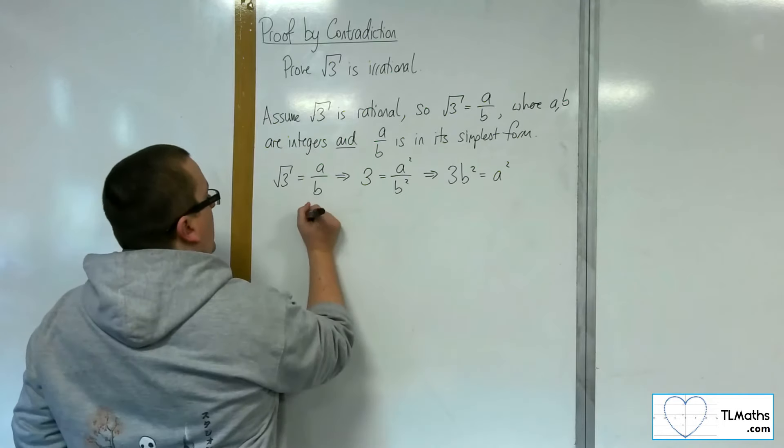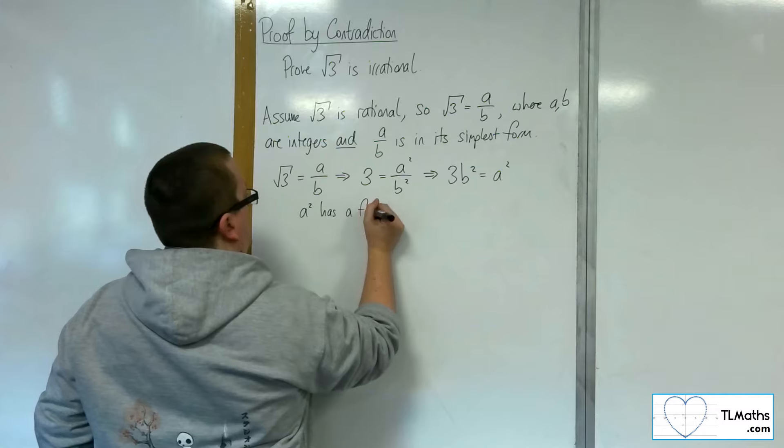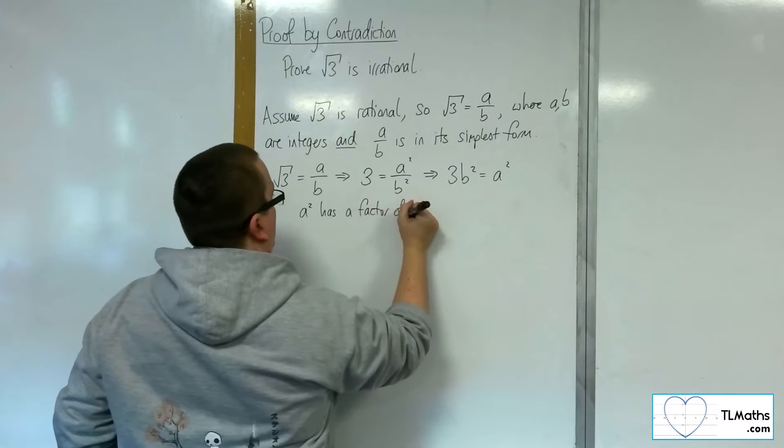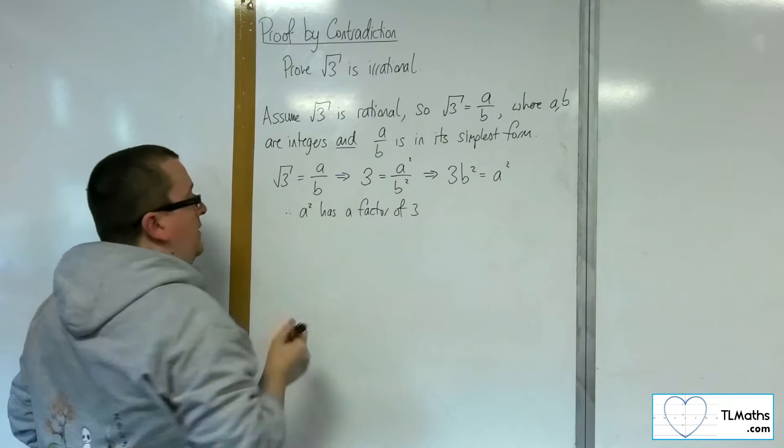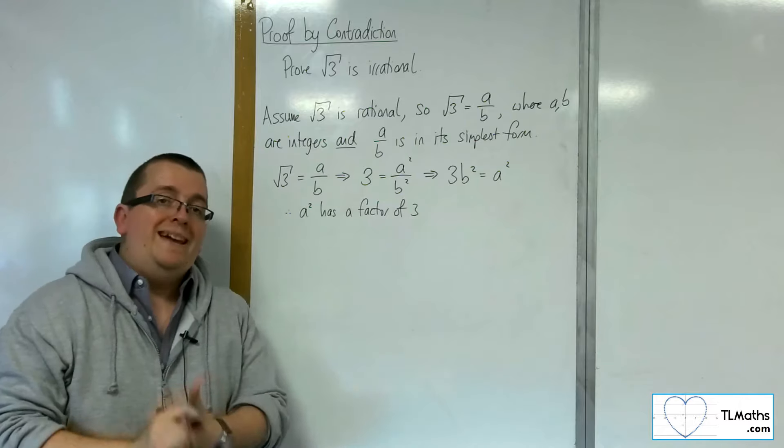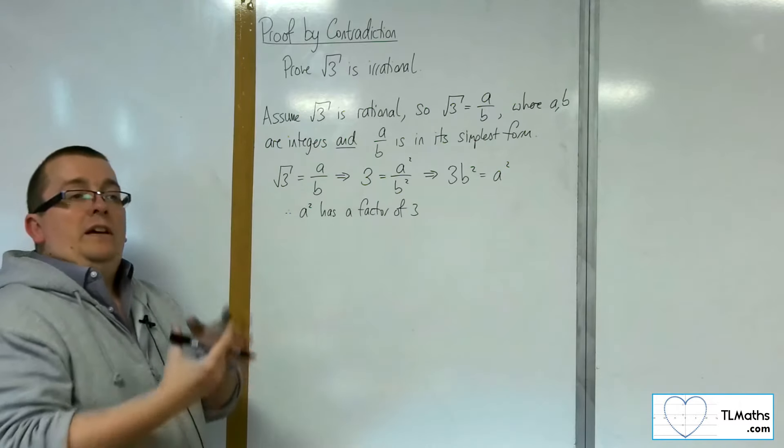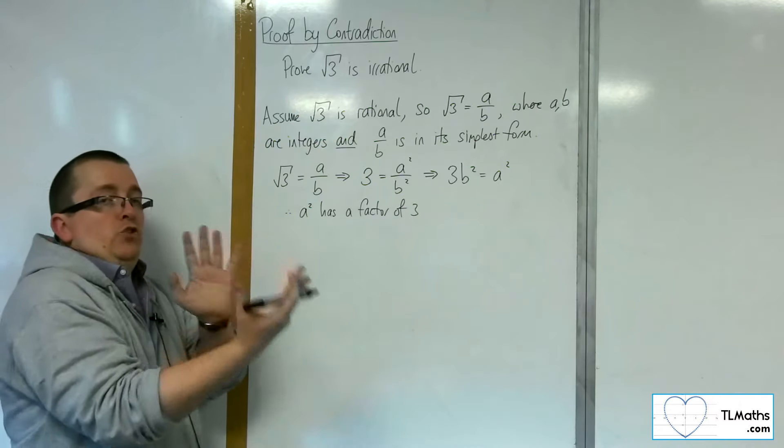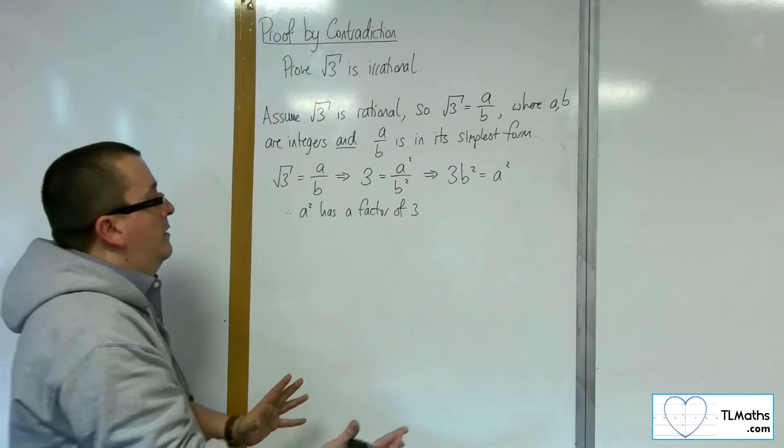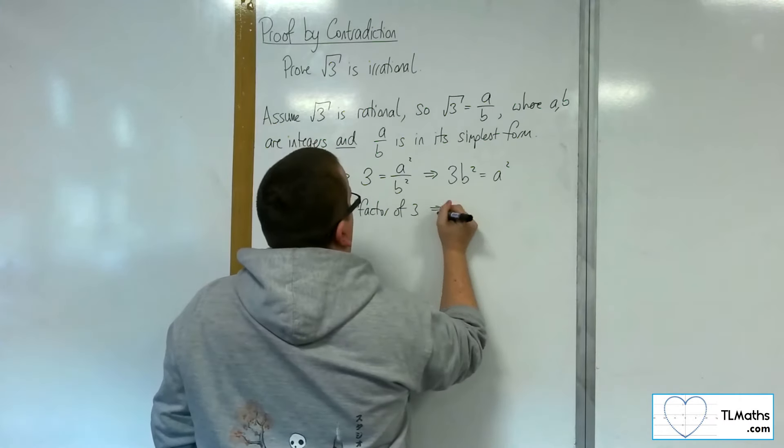So a squared has a factor of 3. So therefore a squared has a factor of 3, and that then implies, due to the very nature of prime factorization, that a must have a factor of 3.